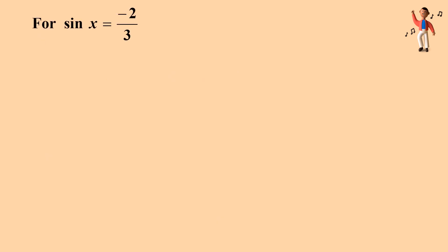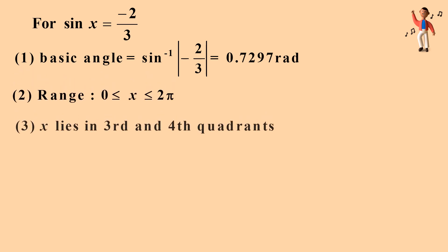For sin x = -2/3: Firstly, find the range. Thirdly, x lies in third and fourth quadrants.